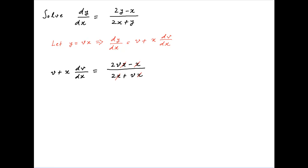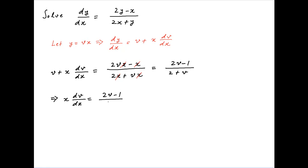The right hand side simplifies to 2v minus 1 upon 2 plus v. This implies that x times dv upon dx is equal to 2v minus 1 upon 2 plus v minus v.